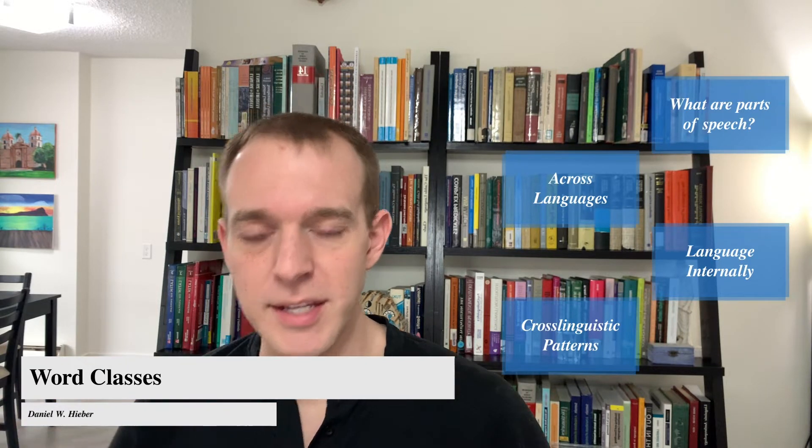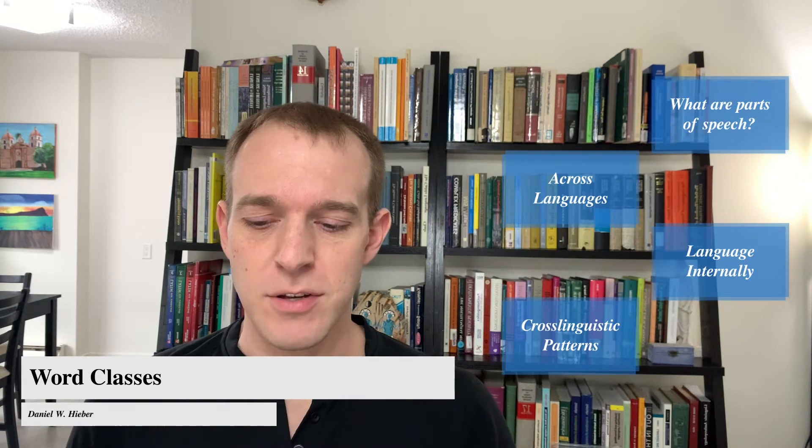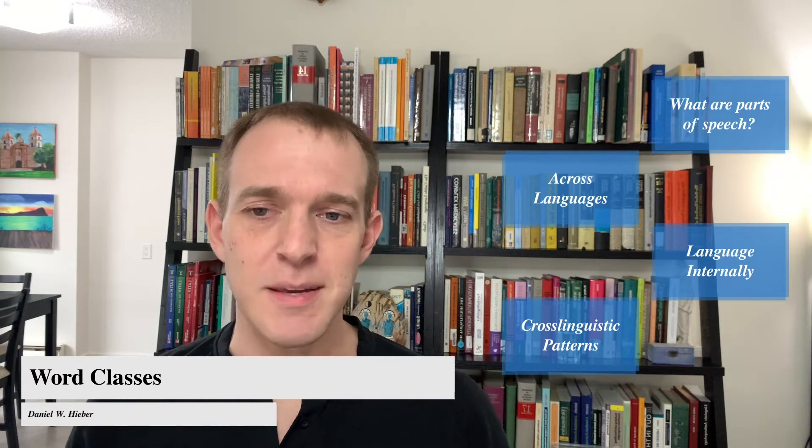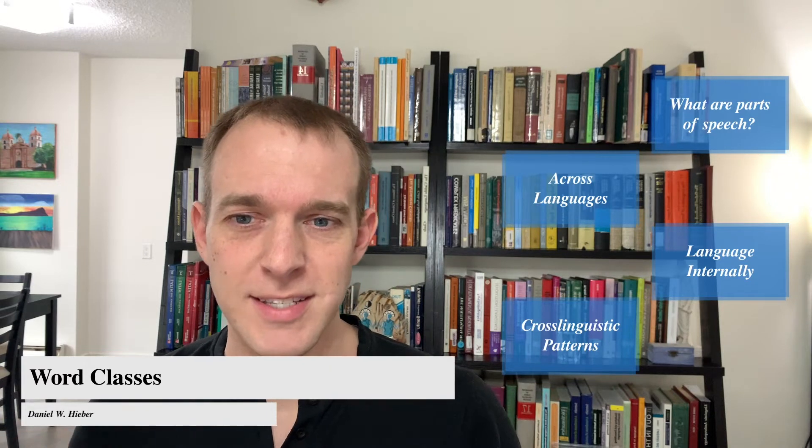So an example I like to use is word order patterns in the world's languages. In about 60% of the world's languages, the standard word order is subject, object, verb. So the question is, why do 60% of the world's languages have that word order?